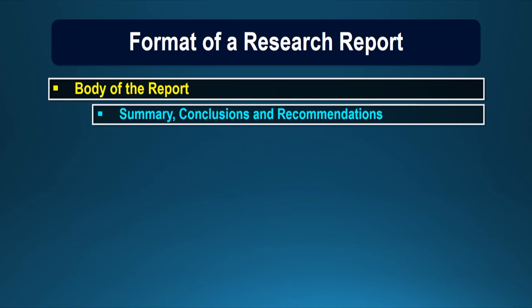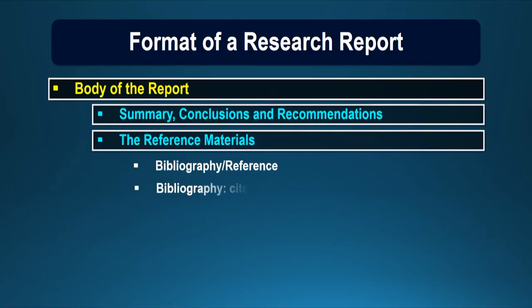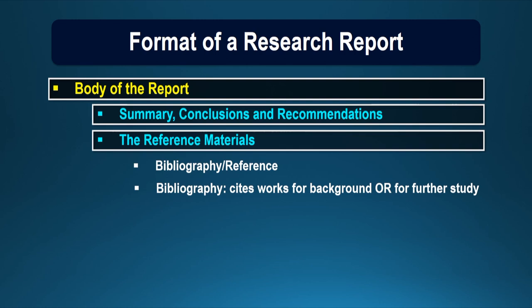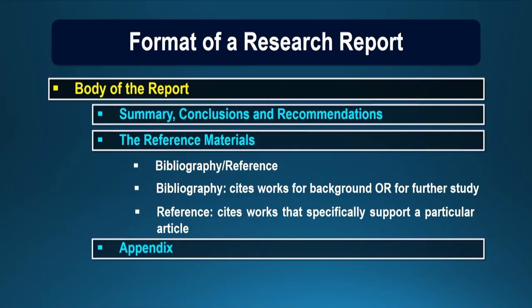The last chapter describes the summary, the conclusion, and recommendations. The last section of the report describes the reference material, which may contain bibliography and references. There is a slight difference between the two: bibliography cites works for background or for further study, whereas references cite works that specifically support a particular article. At the end, some information, tables, pictures, or diagrams which could not find a place in the body of the report are appended at the end of the report.